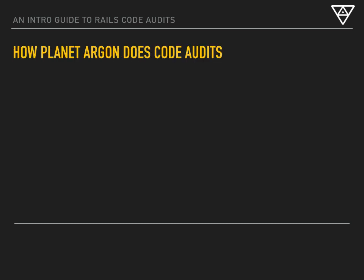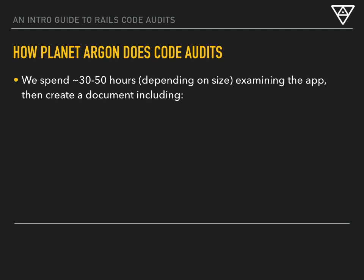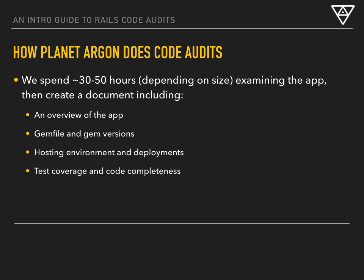So how do we approach them? When potential clients come to us with an existing application, we offer our clients a fixed cost estimate for our code audit. We typically base that on the size of the code base by running rake stats. As a general rule of thumb, we try to complete these anywhere from 30 to 50 hours of developer time. We're big on time boxing here — we put in, say, 40 hours, multiply that by our mid-range hourly rate, and account for time to copy-edit and polish that document. The deliverable will include an overview of the application, details about gems and gem files, hosting environment and deployment details, test coverage and code completeness, system architecture, and potential recommended next steps and how we would prioritize those.